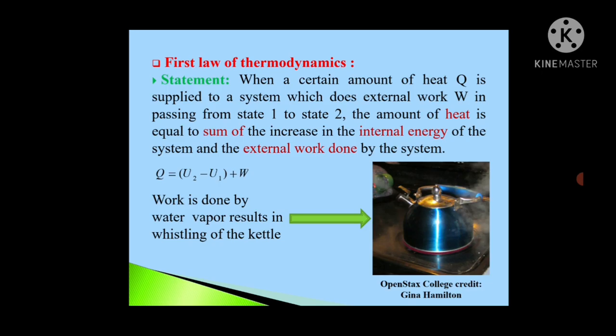Here it is clear that if we supply some amount of heat to a system, then part of heat is used to increase internal energy and some part is used to do external work. Q amount of heat supplied to a system is equal to U2 minus U1, the increase in internal energy of the system, plus W work done by the system.